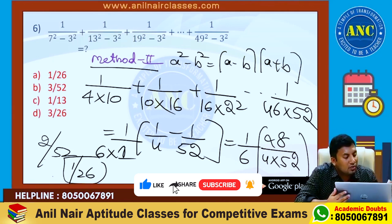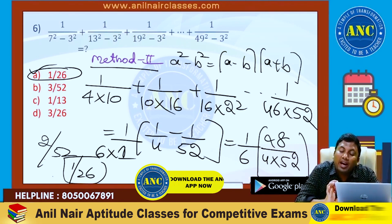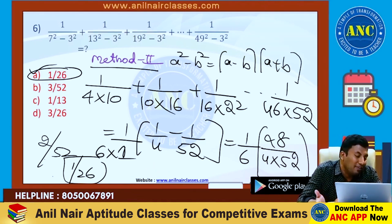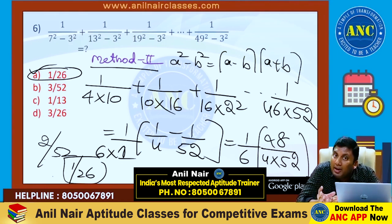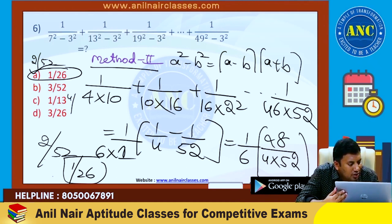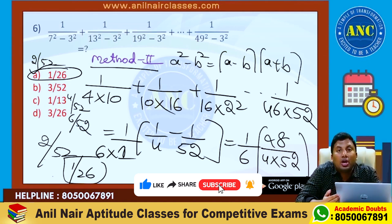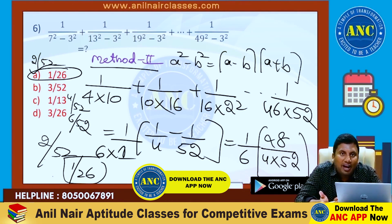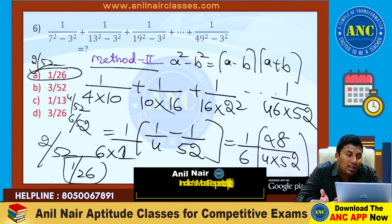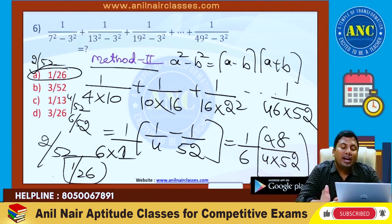1 by 26 is the answer. If you observe, the last term denominator is 52 — the answer should be either 52 or a factor of 52. All the options are 52 or a factor of 52, so the denominator condensing approach may not work here. If I convert everything into 52: the options become 2 by 52, 3 by 52, 4 by 52, 6 by 52 — answer options are closer to each other. So it is better to use method 2. I hope you have understood the significance of method 2 and when not to use the denominator condensing approach.